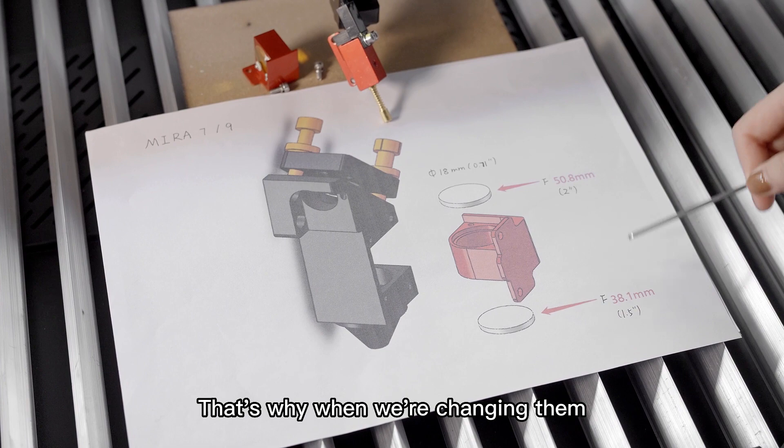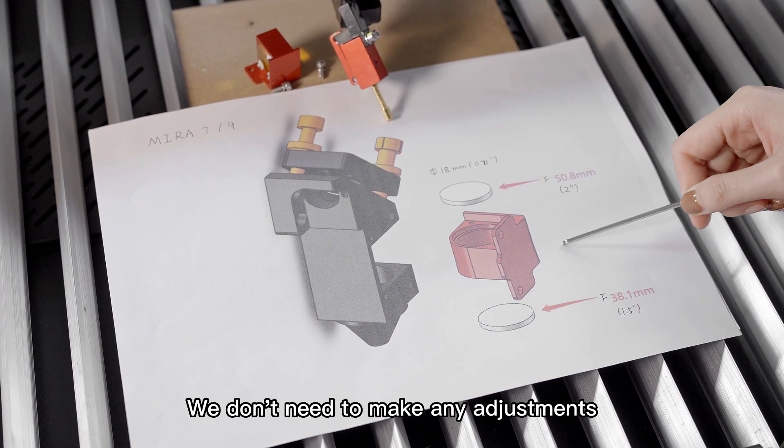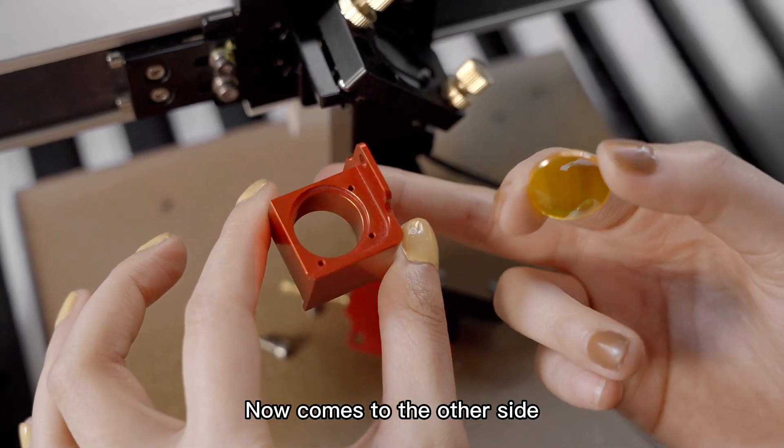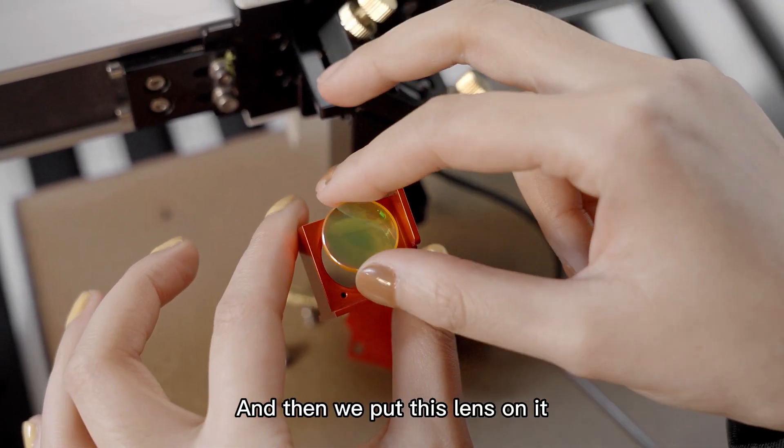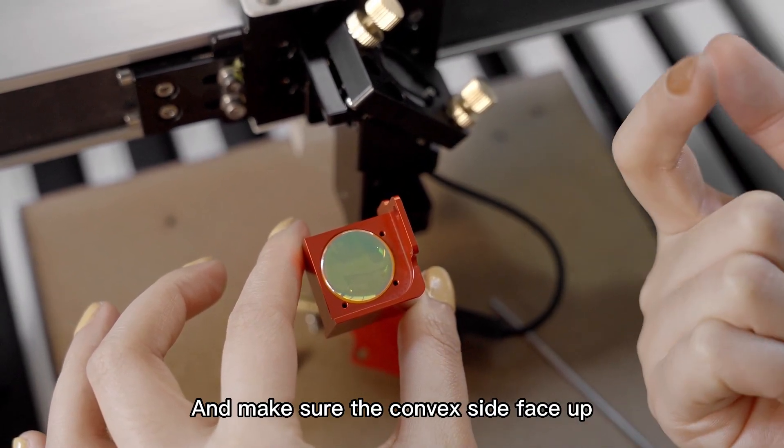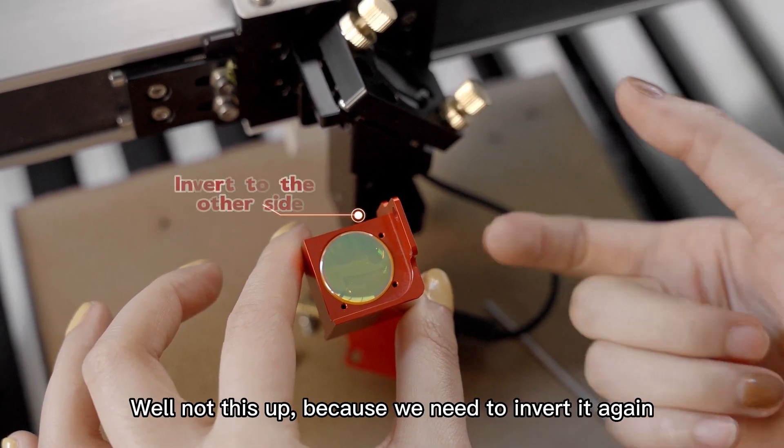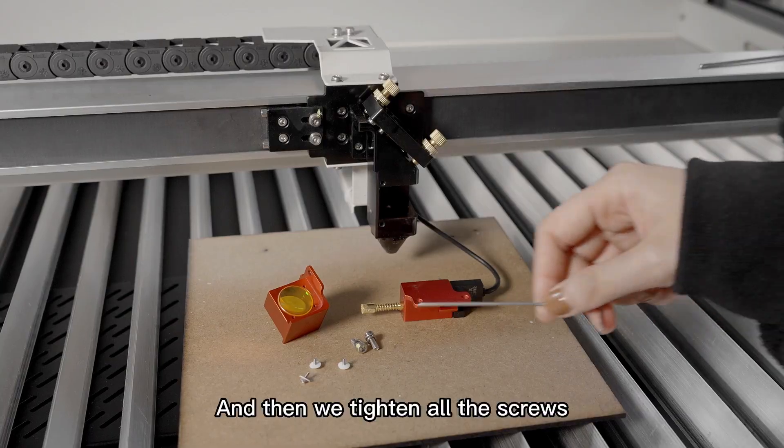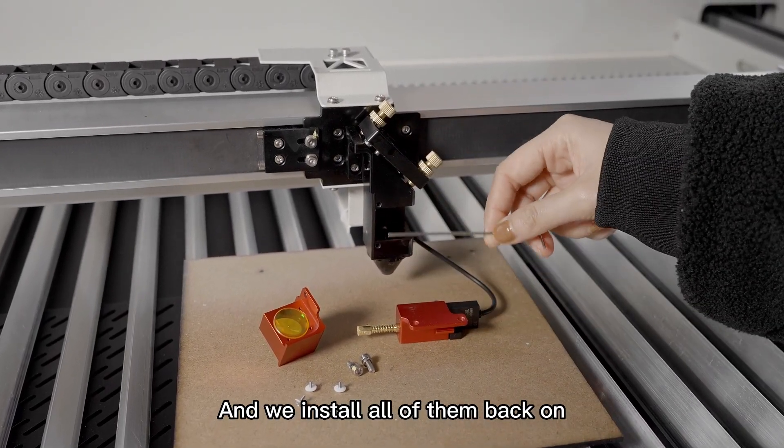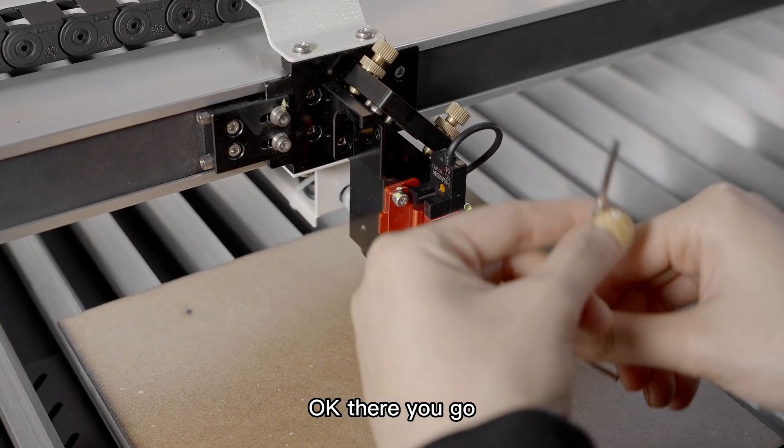That's why when we're changing them, we don't need to make any adjustments for the autofocus depth. Now comes to the other side. And then we put this lens on it and make sure the convex side face up. Well, not this up because we need to invert it again. And then we tighten all the screws and install all of them back on. Okay, there you go.